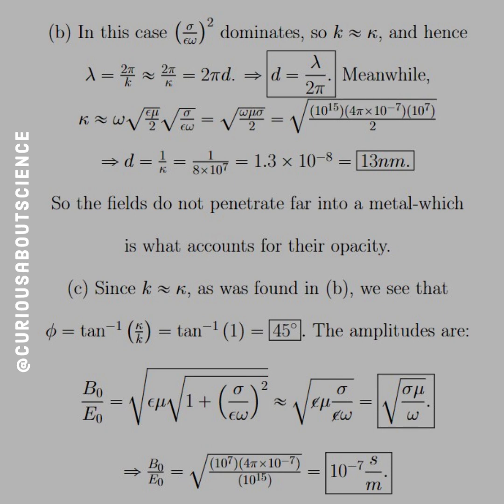so the square terms cancel with the square root. And you see you're left with epsilon times mu, canceling with the epsilon in the denominator, leaving you with sigma mu over omega as their ratio. And if we find this numerically, their ratio is 10 to the negative 7 s per meter.